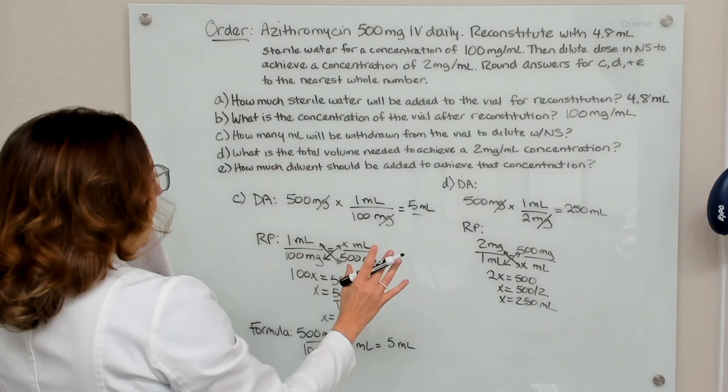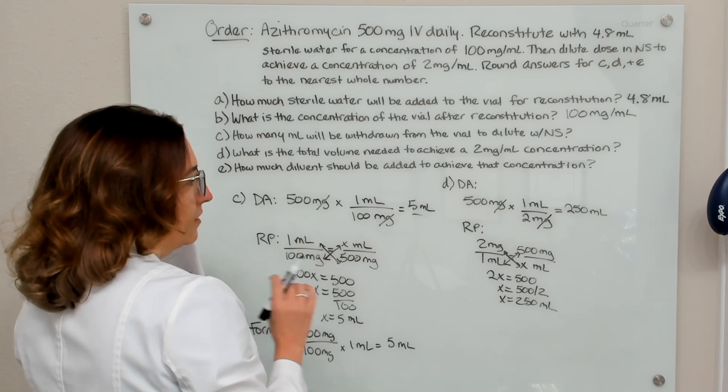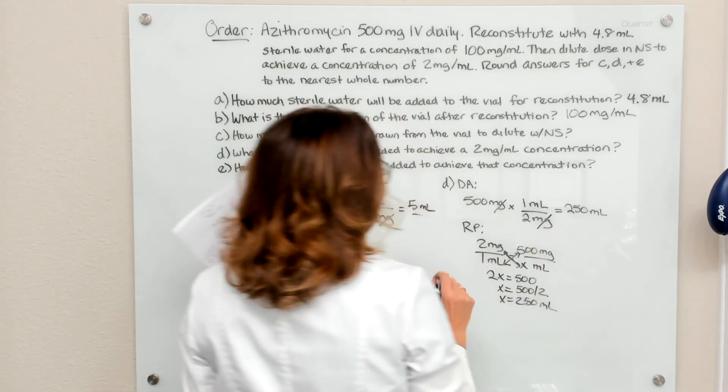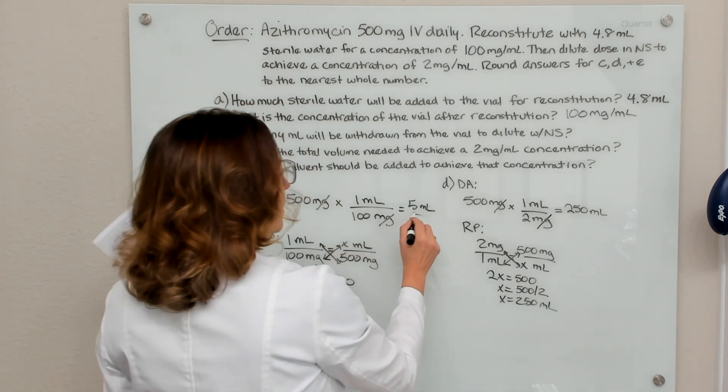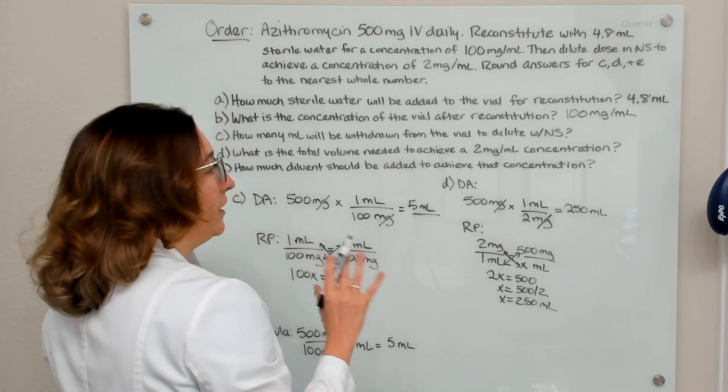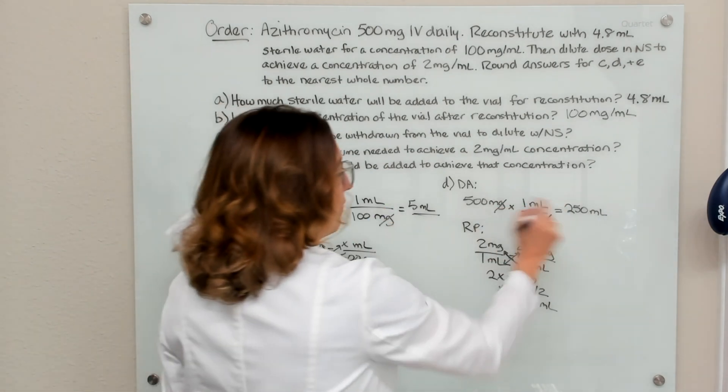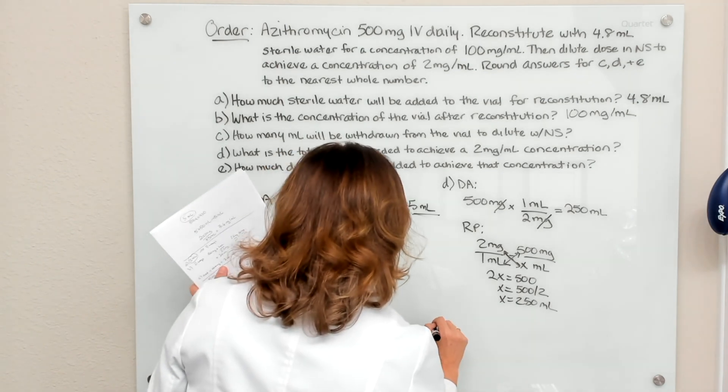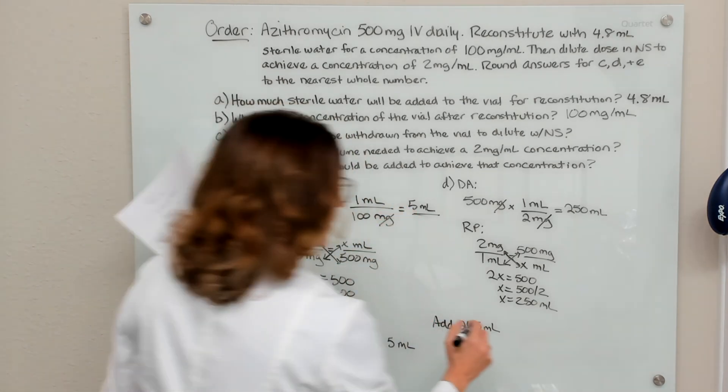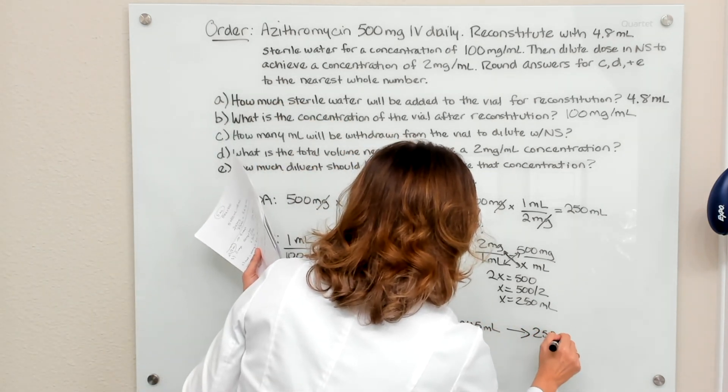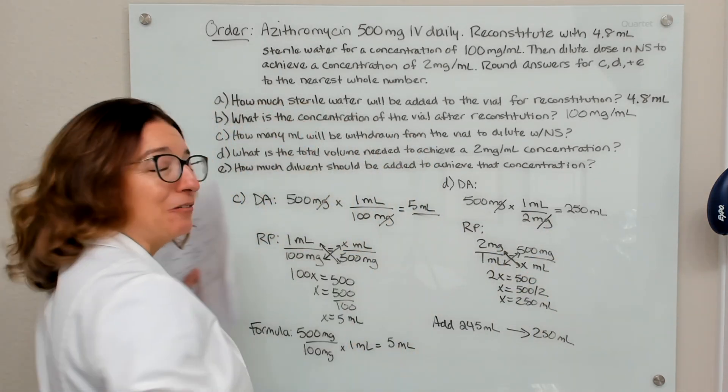Then part E asks us how much diluent should be added to achieve that concentration. So we need a final volume of 250 mLs. But when we pulled the medication out of the vial, it was in 5 mLs. So we actually only need to add 245 mLs to this 5 mLs to get that final concentration. So we need to add 245 mLs to the 5 mLs to get that 250 mL volume that we are looking for. And that is how you would solve this type of problem.